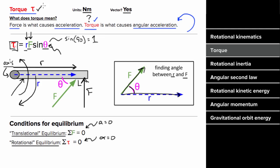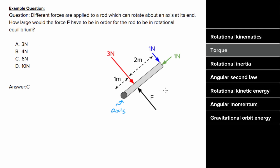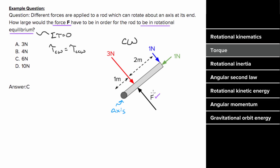Example: a rod has an axis and forces applied as shown. We want the force F needed for rotational equilibrium, meaning net torque equals zero — all clockwise torques must equal all counterclockwise torques. The three-newton and one-newton forces try to rotate the system clockwise; the unknown force F tries to rotate it counterclockwise. The green one-newton force pointing along the rod exerts no torque, because the angle between the force and R is 180 degrees, and sine of 180 degrees is zero — it doesn't cause rotation.